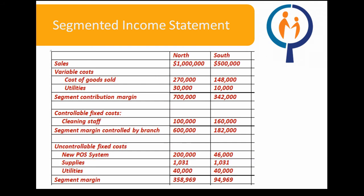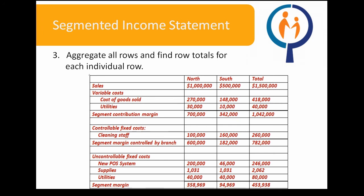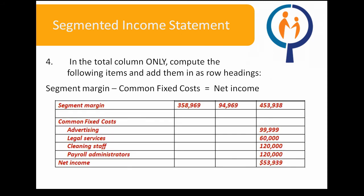With all this in mind, we can calculate a $600,000 segment margin controlled by the North branch and a $182,000 segment margin controlled by the South branch, as well as a $358,969 segment margin for the North branch and a $94,969 segment margin for the South branch. We now want to aggregate all the rows to complete our total column. Our final step is to take our segment margin and subtract common fixed costs to find our net income in the total column only. Common fixed costs in this scenario include advertising, legal services, head office cleaning staff, and payroll administrators. This gives us a net income of $53,939.